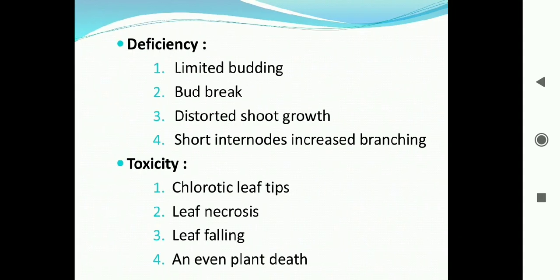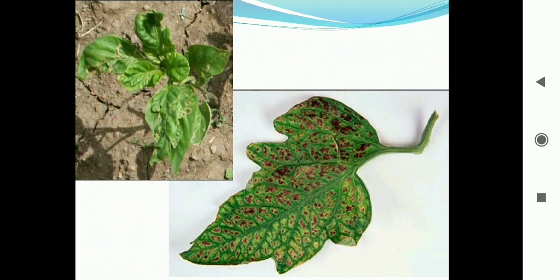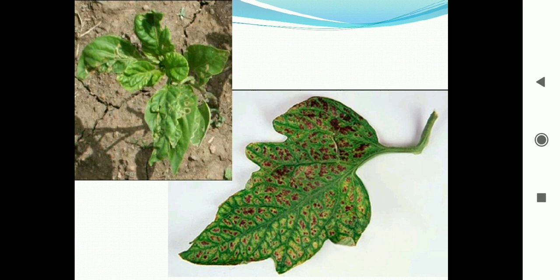Deficiency symptoms of boron: limited budding, bud break due to water concentration imbalance, distorted shoot growth, short internodes, and increased branching. Toxicity symptoms include chlorotic leaf tips, leaf necrosis, leaf fall, and even plant death with a heavy dose of boron. Images show chlorotic symptoms on leaf margins and necrotic spots on leaves due to boron deficiency.